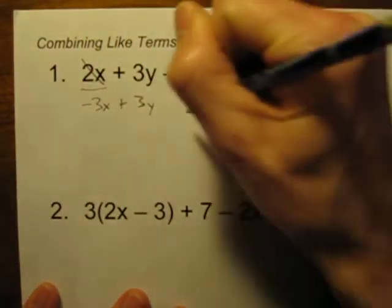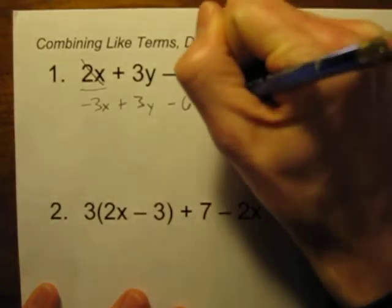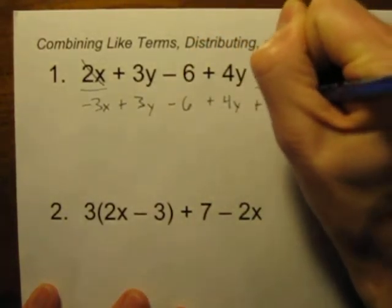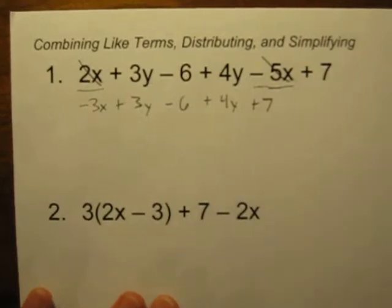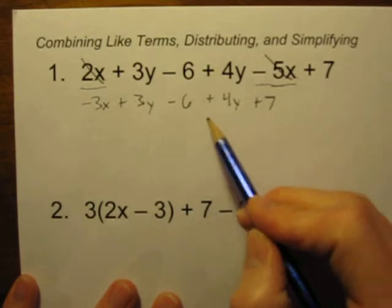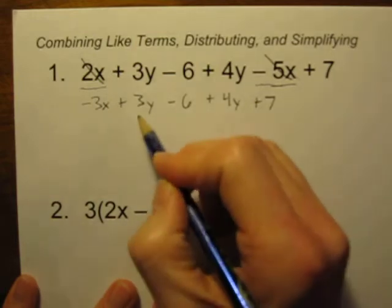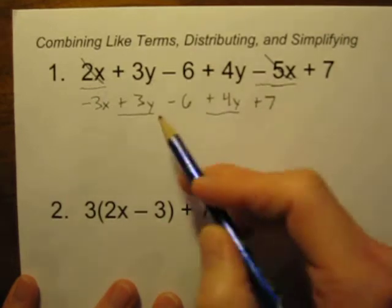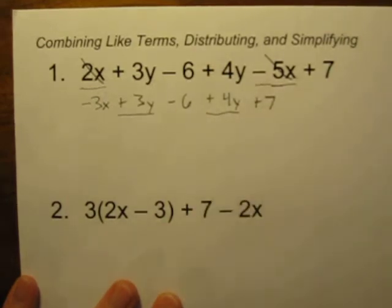We'll rewrite plus 3y minus 6 plus 4y and don't forget that plus 7. Now let's work on the next thing. We're done with our x's but now let's work on these y terms. Here's a plus 3y, there's a plus 4y. Those are like terms because they both have a y in them. So let's combine those.